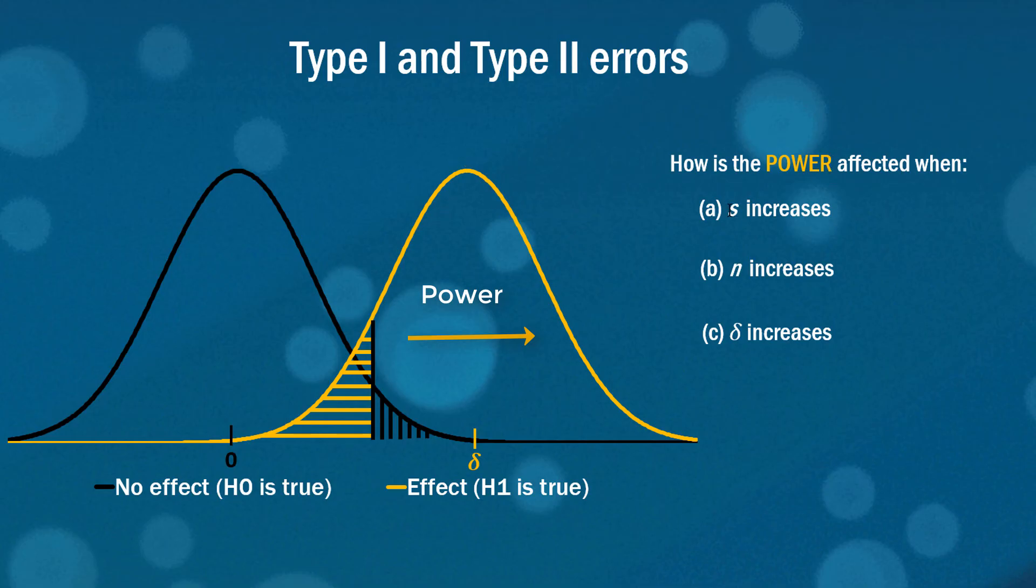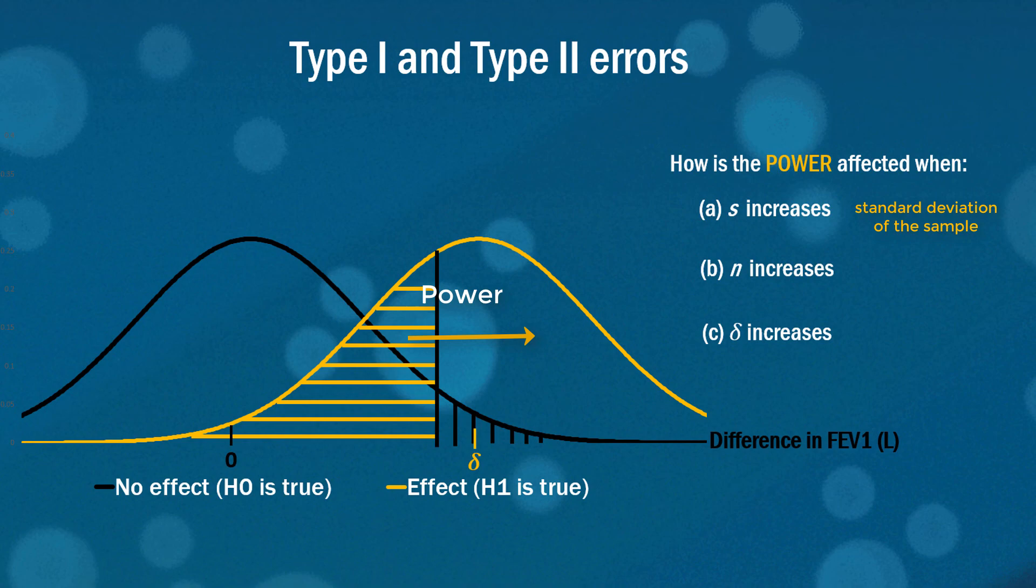I want you to think about how the power, which is in fact this region here, how is the power affected when S increases? S is the underlying standard deviation of our sample. With more variation and uncertainty in our sample these curves are going to become fatter and if we hold everything else the same you can see that the area of overlap is going to increase therefore the power will have to decrease. You can see that the power now takes up a smaller proportion of that yellow curve.